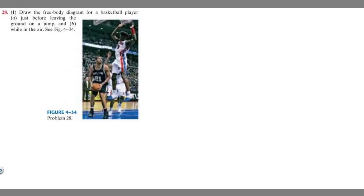In this problem we're told to draw the free body diagram for a basketball player A just before leaving the ground and B while in the air. So what is a free body diagram?